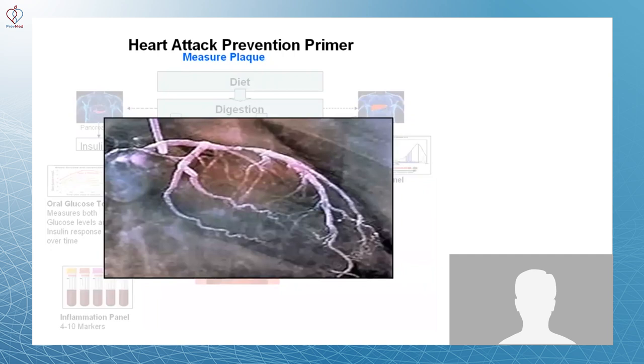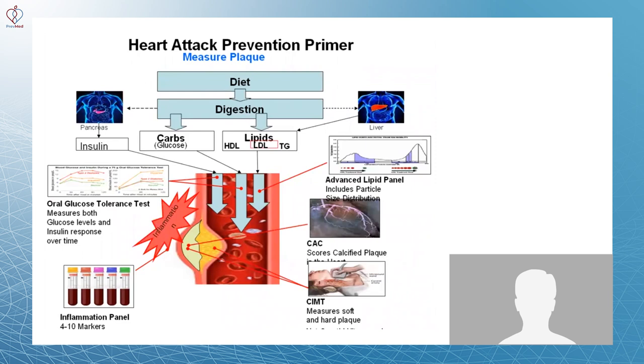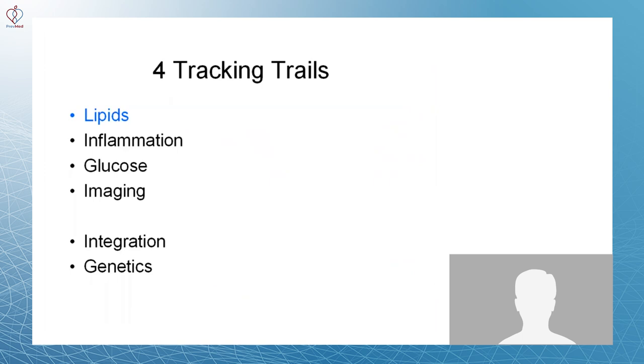The fourth module, how do you look at the arterial walls? There are a couple of main ways. One is the calcium scoring. And then the other one is a CIMT, which is a carotid-based test, which measures soft and hard plaque. So those are the four tracking trails.